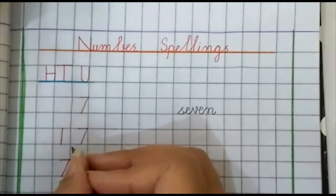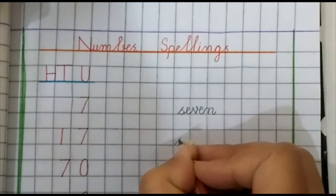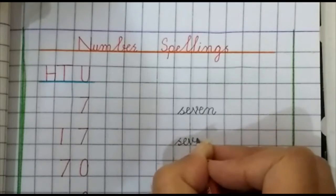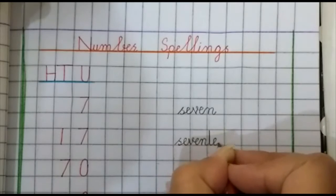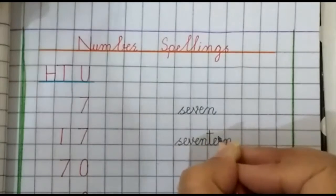Next number is 17. S, E, V, E, N, T, double E, N. Seventeen.